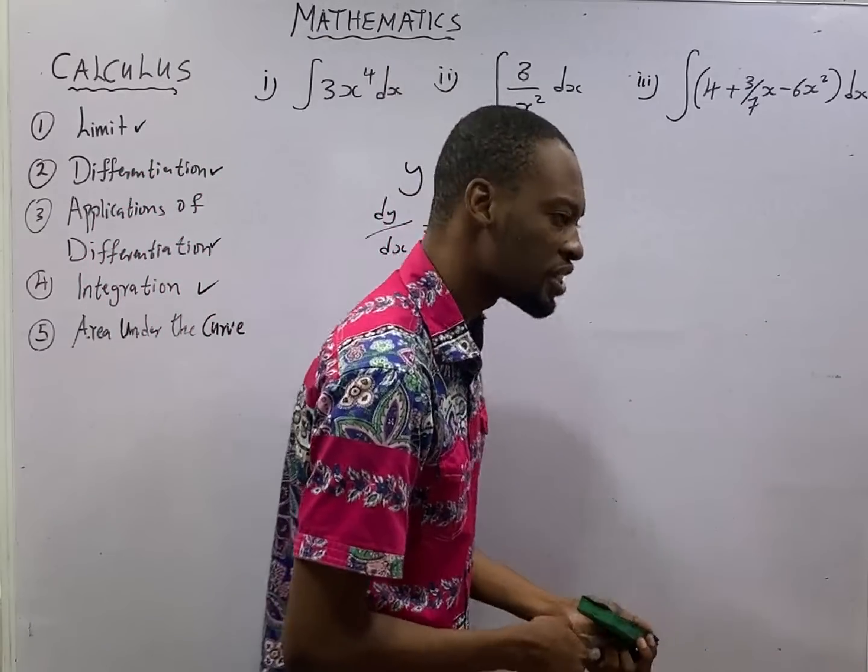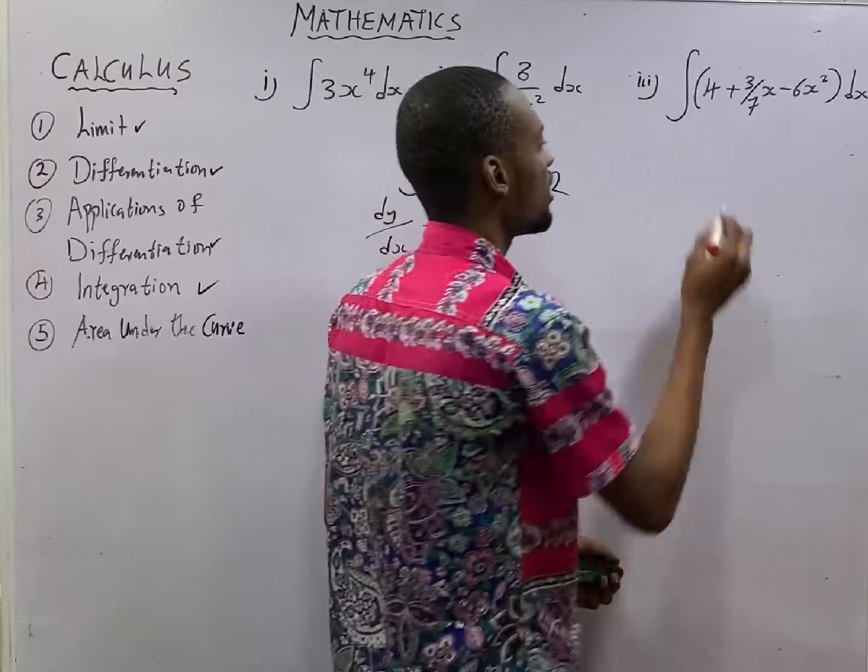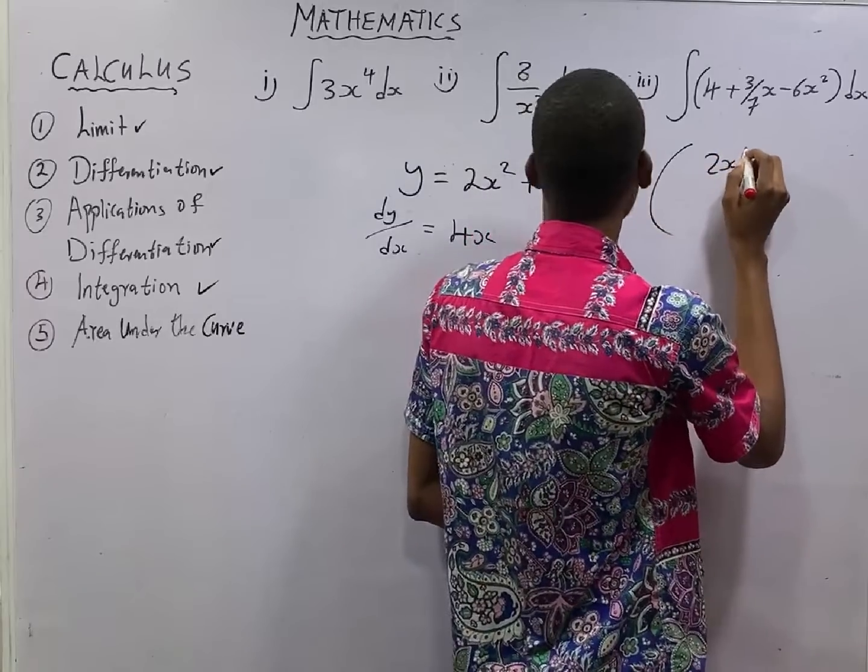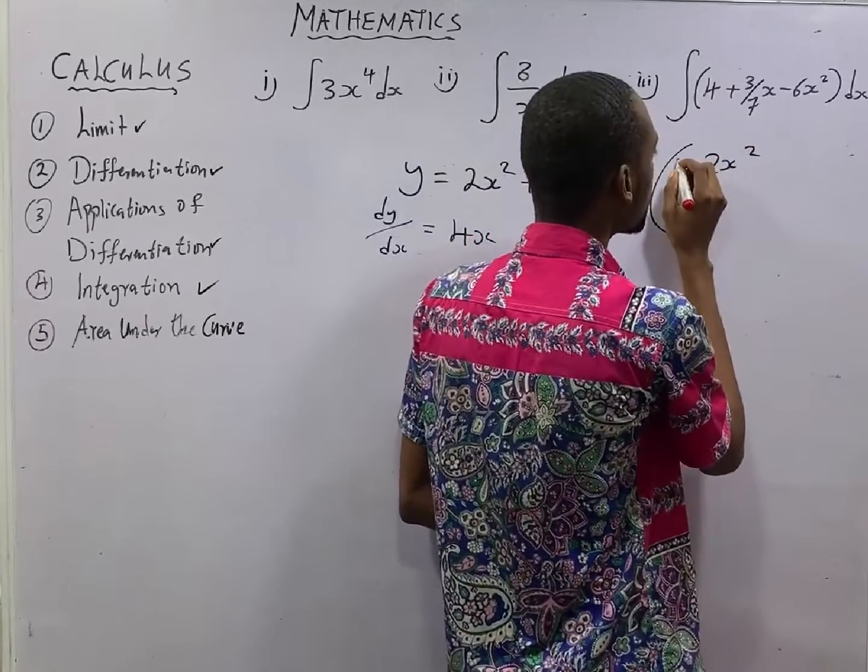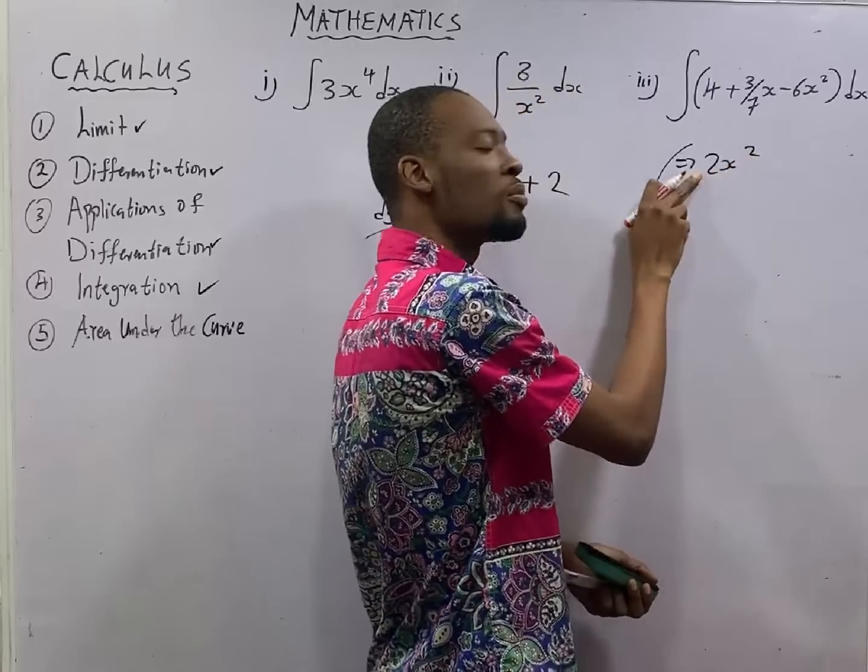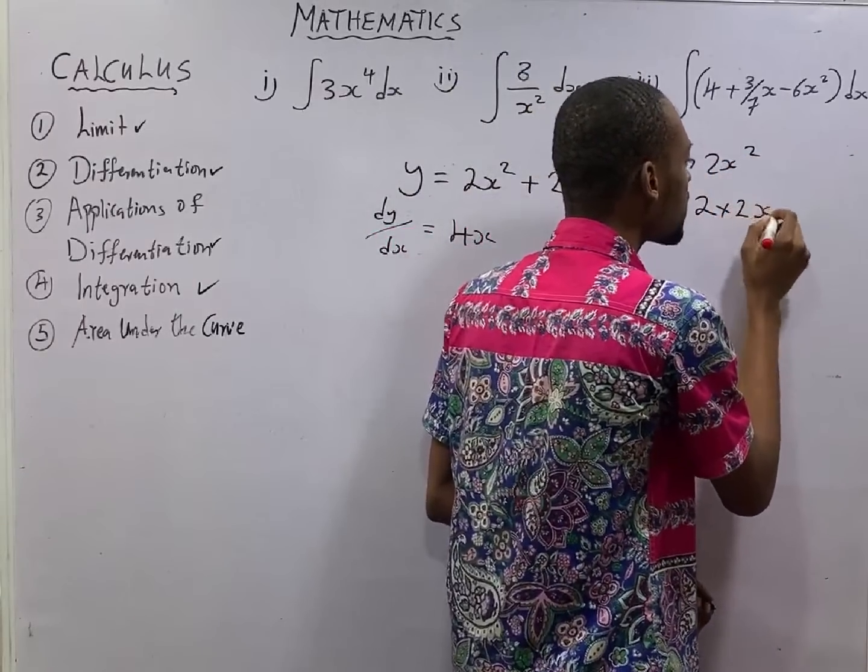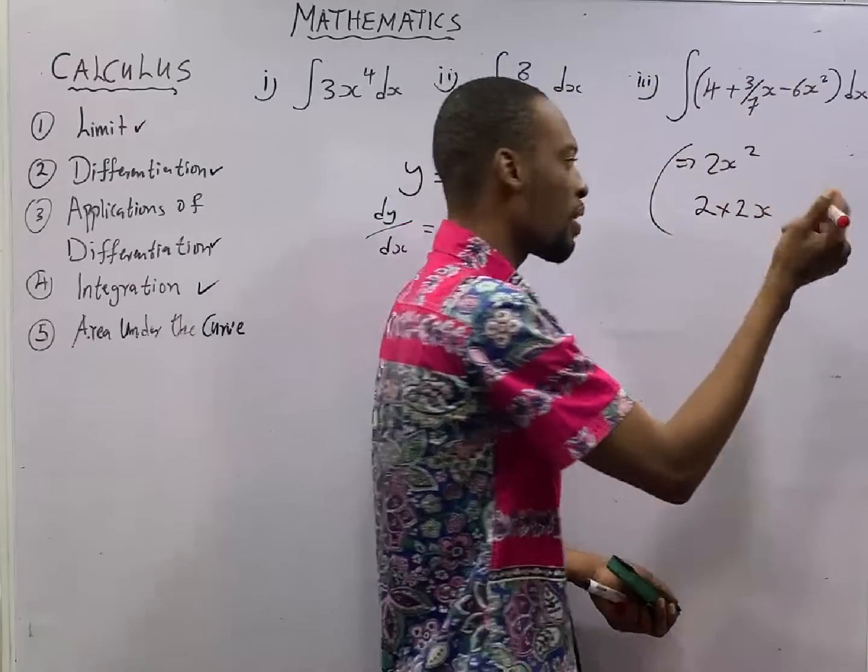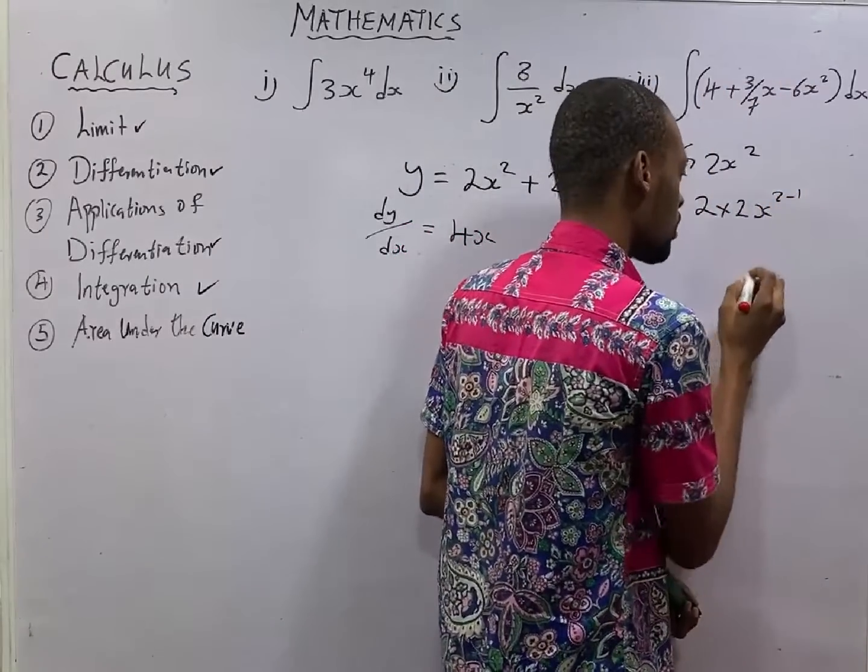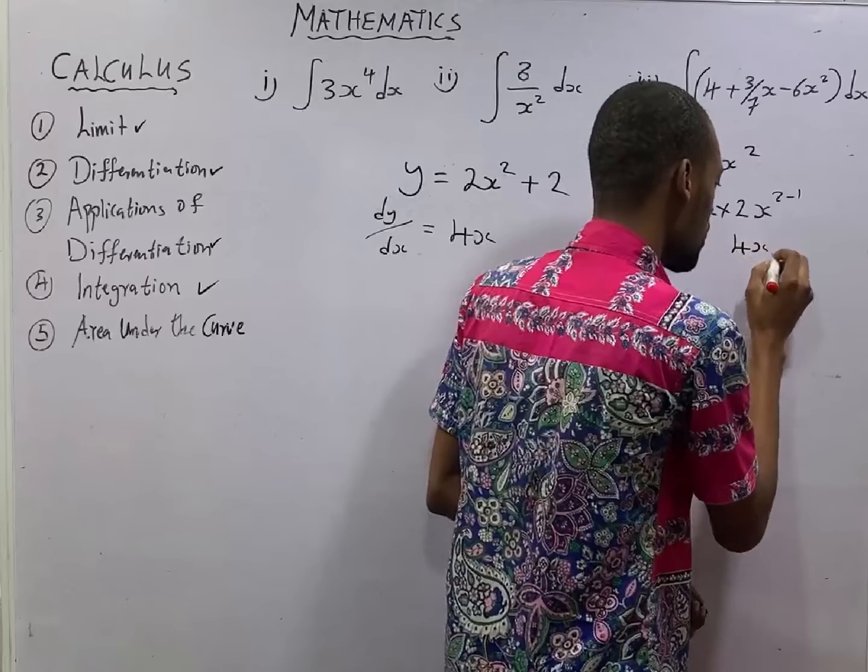So, how did you differentiate? To differentiate, let's say, 2x squared. You use the power to multiply the function. That is 2 times 2x. Subtract 1 from the power. 2 minus 1 to get 4x.